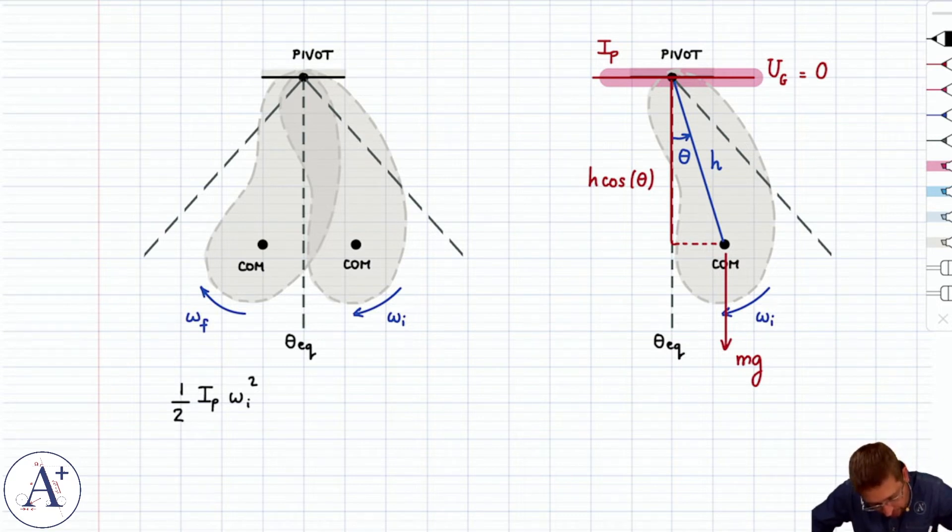And then, how much gravitational potential energy does this thing have? Well, it has a negative amount. If this is h and this is theta initial, let's just call this theta final, then minus Mg h cosine of theta final.